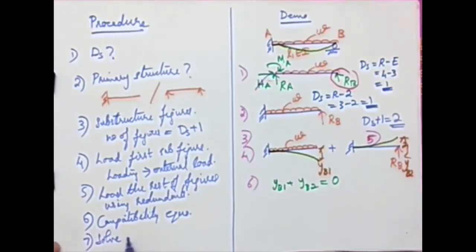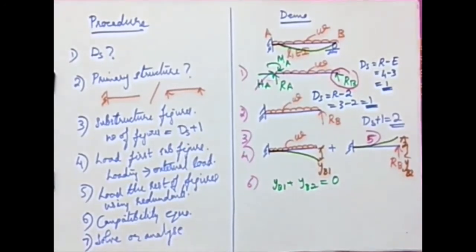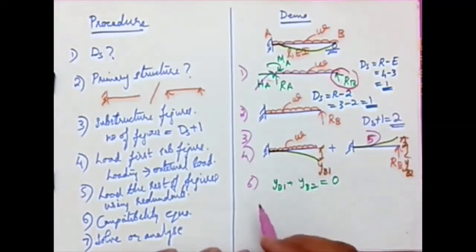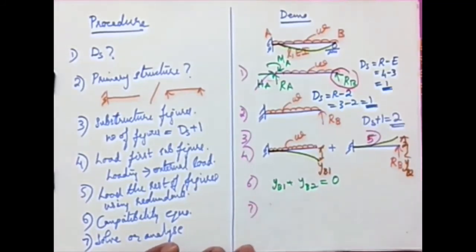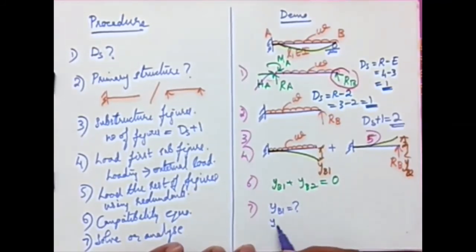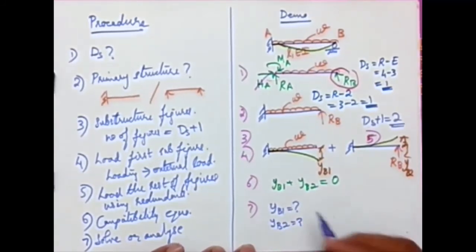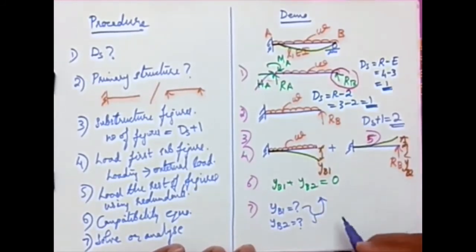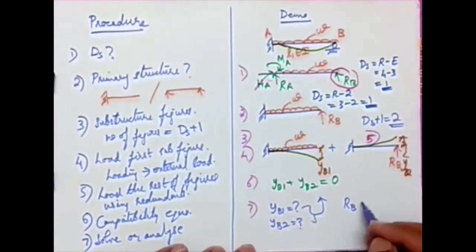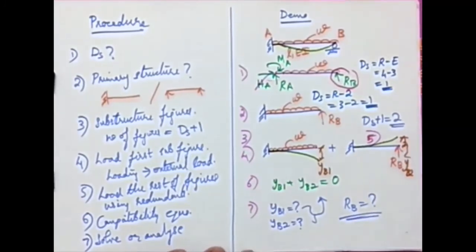Step 7 is to solve. We calculate YB1 from the first sub-figure and YB2 from the second sub-figure, substitute these into the compatibility equation YB1 + YB2 = 0, and solve to get the value of the redundant R_B.